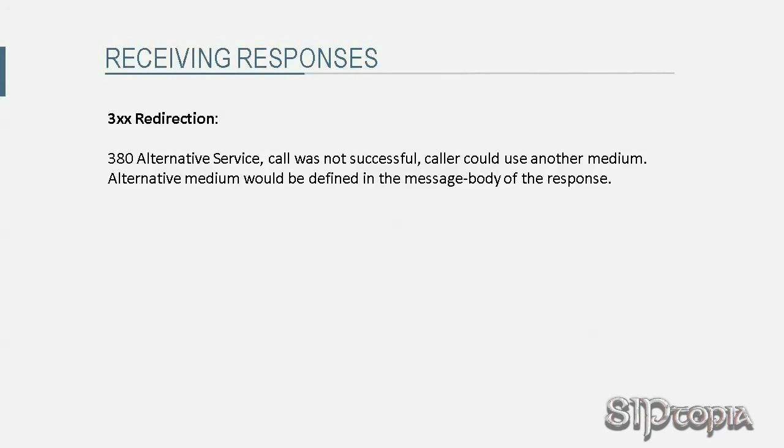380 Alternative Service is the final 3xx response defined in RFC 3261. It indicates that the call was not successful but the caller could use another medium to reach the called party. The alternative medium is defined in the message body of the response. For example, if Jane has a headache and doesn't want to talk but is chatting with friends via a chat application, when Tarzan calls Jane he cannot reach her by voice. However, the SIP proxies respond with 380 Alternative Service, indicating that Jane might be reachable via chat.